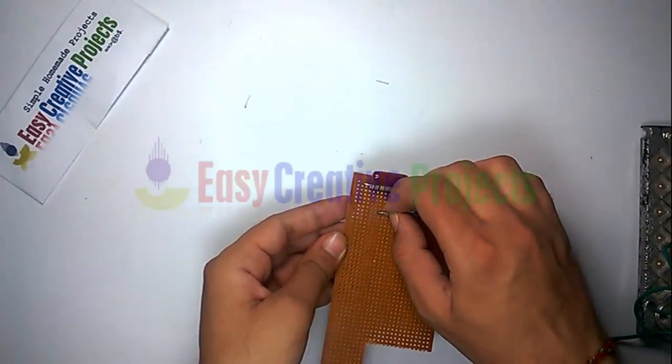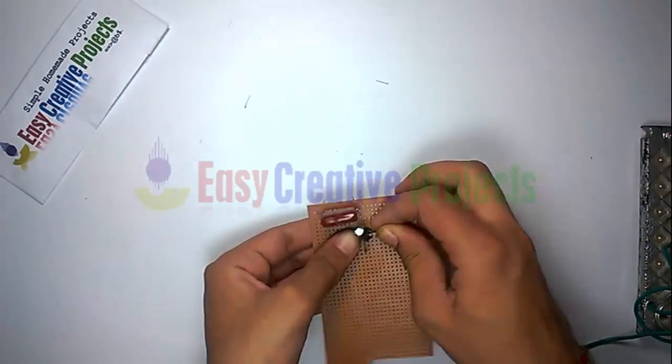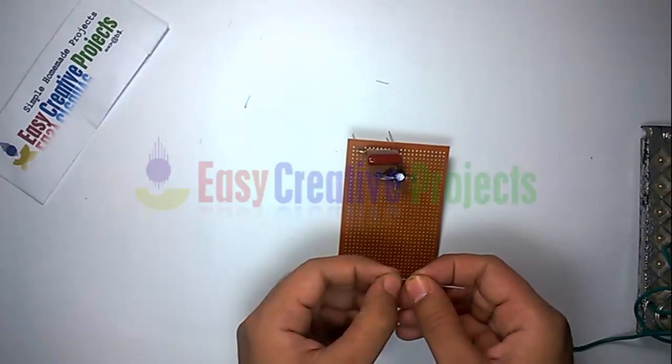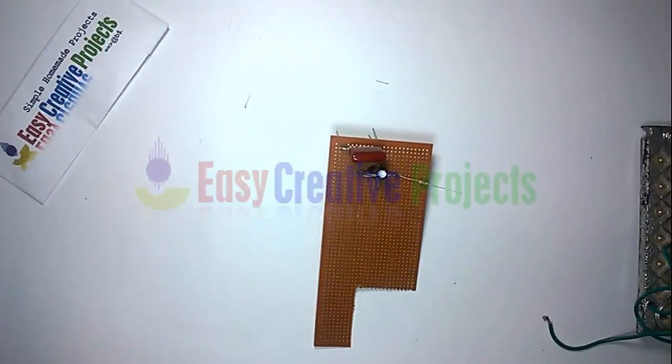Now connect all spare parts on PCB board. Connect 4 diodes using circuit diagram. Project is ready for test.